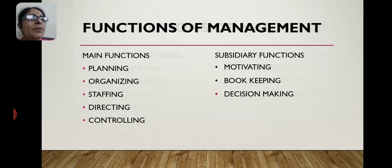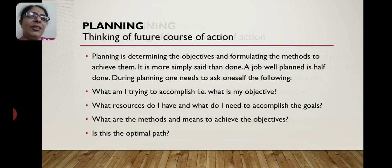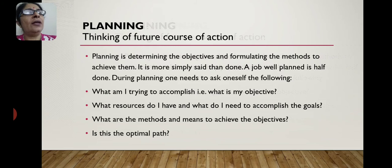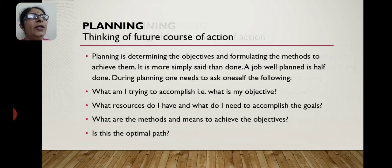Functions of management — main functions are: planning, organizing, staffing, directing, and controlling. There are also subsidiary functions: motivating, bookkeeping, and decision making. Planning ka matlab hai — suppose humein koi kaam aata hai, toh pehle hum decide karte hain ki yeh kaam kaise karna hai, isko choti choti activities mein divide karte hain, sochte hain ki yeh kaam kaun kar sakta hai, resources available hain ya nahin, aur organization ka objective kaise achieve hoga. Planning is determining the objectives and formulating the methods to achieve them.